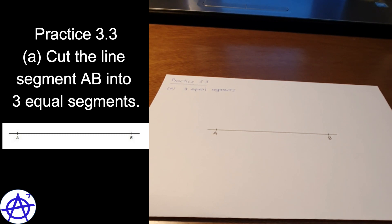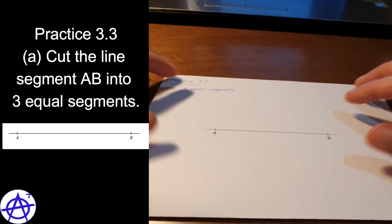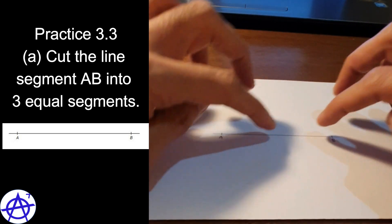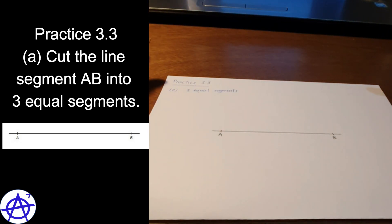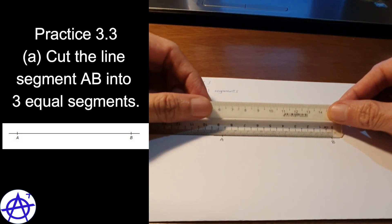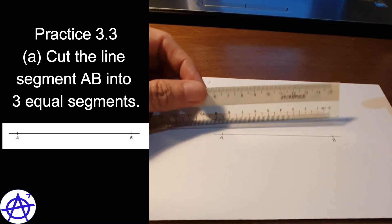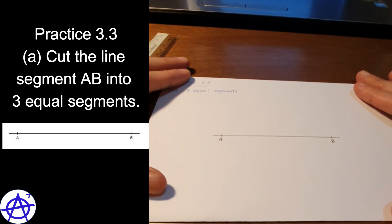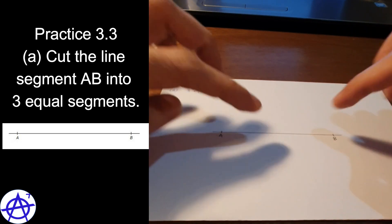Practice 3.3. In this practice, we are trying to cut a line segment into n equal segments. So for A, we are trying to cut the line segment AB into 3 equal segments. It means that this is a line segment AB, and we try to cut it into 3 equal parts. Without using a ruler to measure the length of AB and then divide by 3, we are instead using geometrical constructions to cut this line segment AB into 3 equal parts.